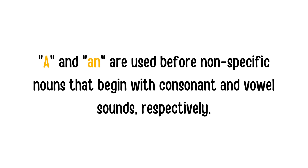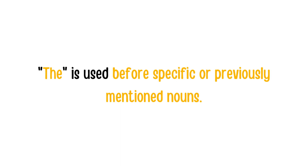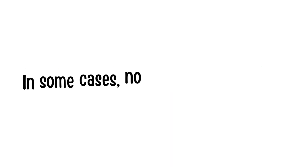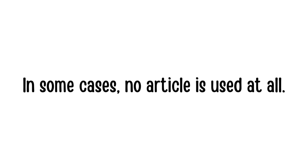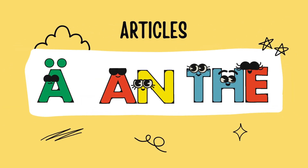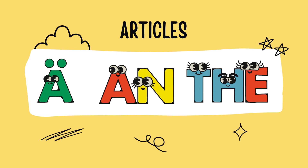So to summarize: a and an are used before nonspecific nouns that begin with consonant and vowel sounds, respectively. The is used before specific or previously mentioned nouns. And in some cases, no article is used at all. I hope this video has been helpful in understanding the use of articles in English.